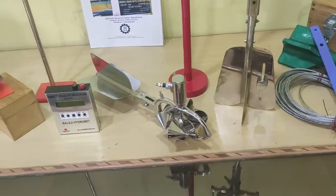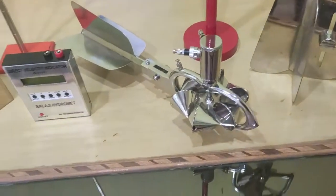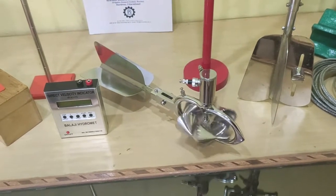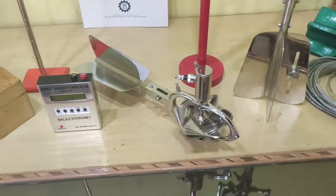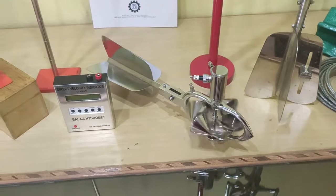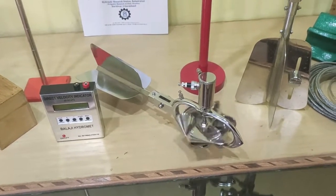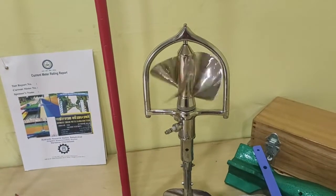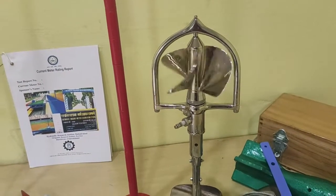Another current meter is called cup type water current meter. In the European countries this type of current meter is called AA type water current meter or also the vertical axis water current meter. This is the third one, the horizontal type of water current meter or propeller type water current meter.